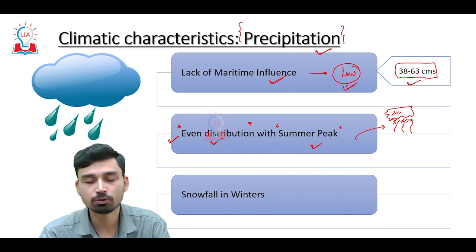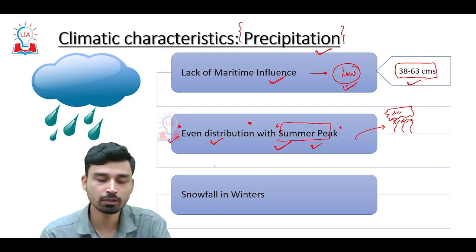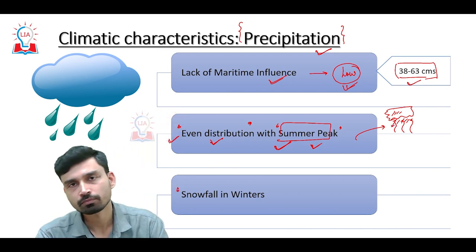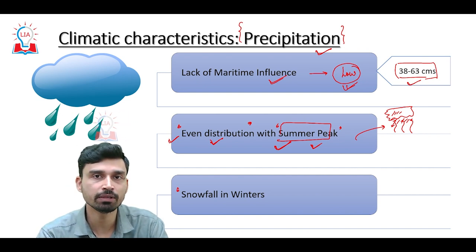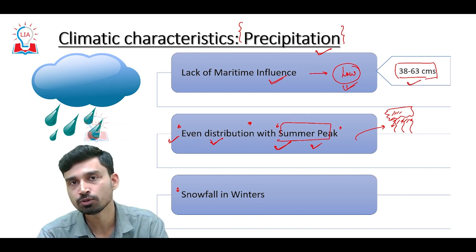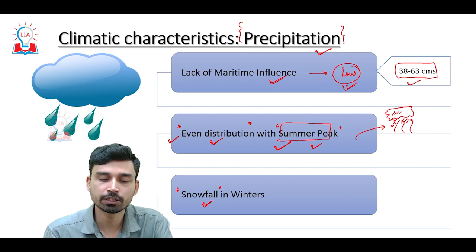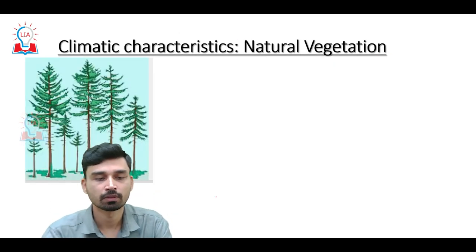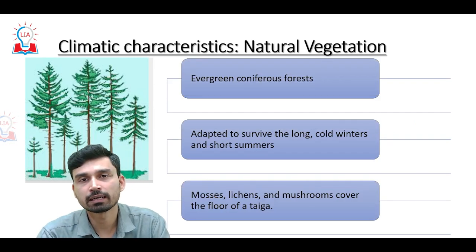In the Taiga climate, rainfall is evenly distributed but the peak is achieved during the summer season. In winter, rainfall cannot occur in liquid form because temperatures near the ground surface and in the atmosphere are below zero degrees Celsius, and thus solid precipitation in the form of snowfall is commonly observed.